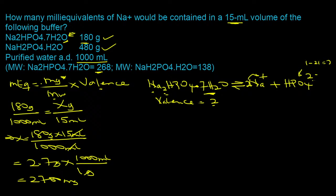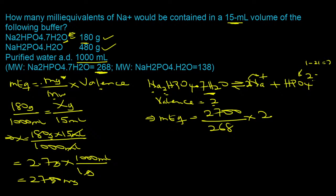We now have everything needed for the heptahydrate. Plugging into the equation: MEq = 2,700 / (268 × 2) = 20.15. That's the milliequivalents from the sodium phosphate dibasic heptahydrate. We now need to repeat the process for sodium phosphate monobasic monohydrate.